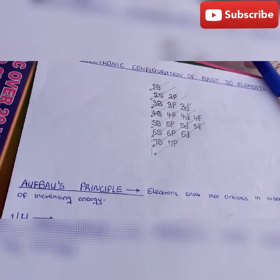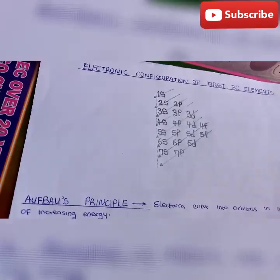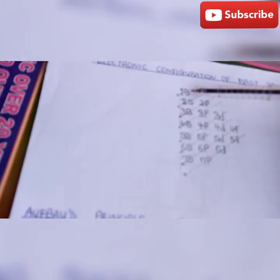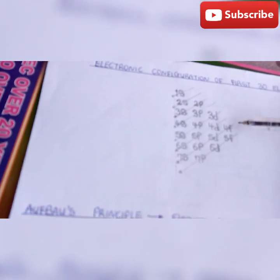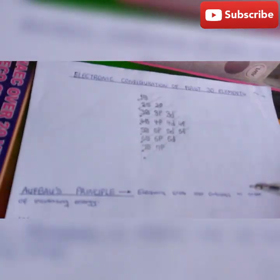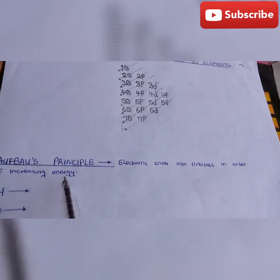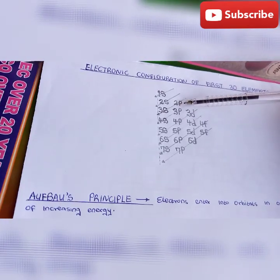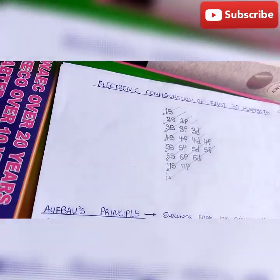So please guys, don't forget to subscribe. Let's start with the principle. When writing the electronic configuration of the elements, start by filling the s orbital, then the p orbital, then d orbital, then the f orbital. This electronic configuration goes with Aufbau's principle, so electrons enter into orbitals in order of increasing energy. S orbital is of lower energy compared to p orbital, p orbital is of lower energy compared to d orbital, d orbital is of lower energy compared to f orbital.